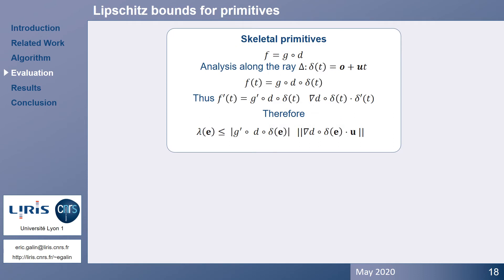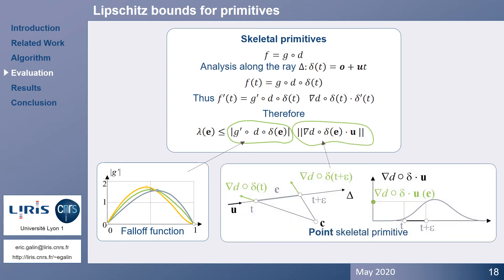For primitives, we analyze the derivative of the field function along the ray, and bound this derivative. After developing the closed form expression, two terms arise. The first one involves the derivative of the falloff function, which is easy to bound over the segment, using interval analysis. The second one involves the scalar product between the gradient of the Euclidean distance to the skeleton, and the derivative of the ray, which is in fact the unit direction.